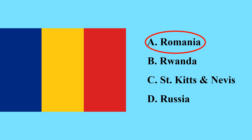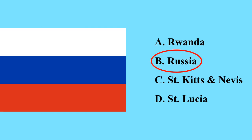This is the flag of Romania, a country in Europe. This is the flag of Russia — Russia is the largest country in the world by area. It is a transcontinental country in Europe and Asia — amazingly Russia is the largest country in both Europe and Asia. Its capital city is Moscow.